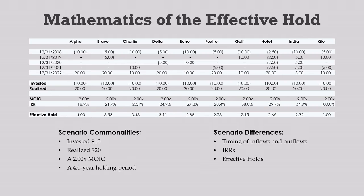Let's start with the alpha scenario. This is the one where all the capital is invested on the first day of the hold and all the capital is returned on the last day. The first thing I notice is that the effective hold is equal to the actual hold of four years. This only happens in deals where there's a single inflow and a single outflow — in these deals, the IRR calculation is no different than a CAGR calculation, so the effective holding period converges to the actual holding period. Also, alpha is the scenario with the worst IRR; the IRRs in every other scenario are higher.